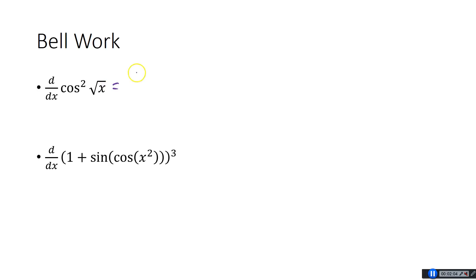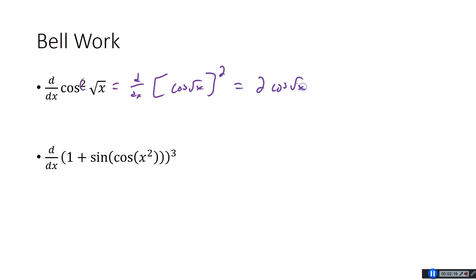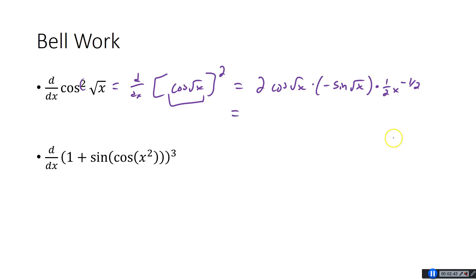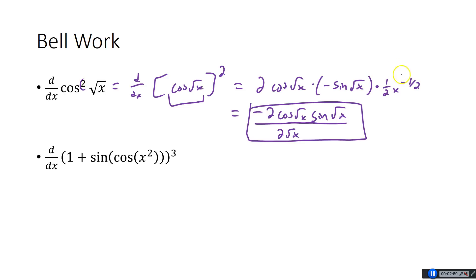Derivative of cos²(√x). You might want to rewrite this as [cos(√x)]² to see the inside and outside functions. The outermost function is the square, so that gives 2·cos(√x). Multiply by the derivative of the inside: cos(√x), which is negative sine(√x). Then chain again — √x is the inside, so multiply by the derivative of √x, which is one-half·x^(−1/2). We can write this as negative 2·cos(√x)·sine(√x) divided by 2√x.